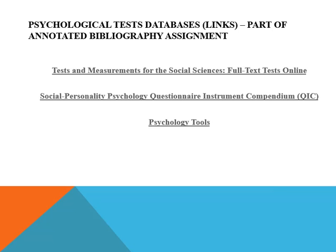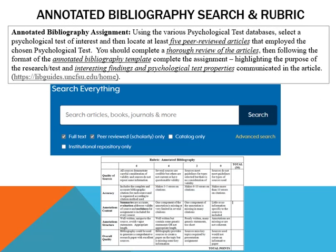Again, you should not have to pay for any of these psychological tests. Once you've located a test, you will try to find peer-reviewed articles about that particular psychological test — that's what the annotated bibliography assignment is about. Select a psychological test of interest, then locate at least five peer-reviewed articles that employed that chosen test. Complete a thorough review of the articles, then following the format of the annotated bibliography template provided, complete the assignment. You highlight the purpose of the research, the purpose of the test, and interesting findings regarding psychological test properties.